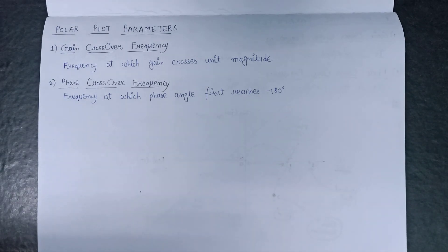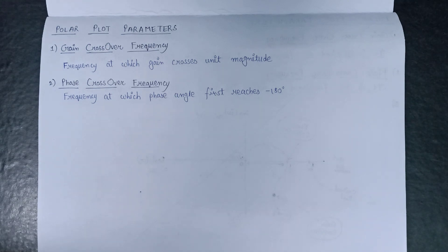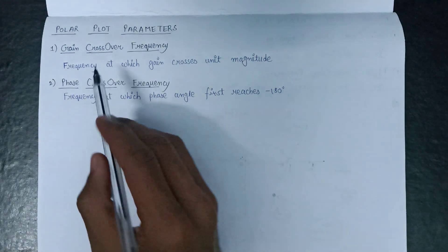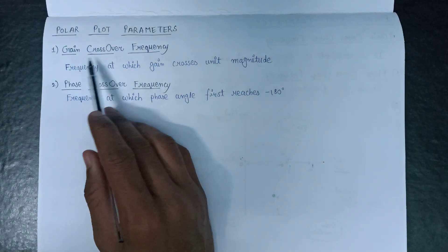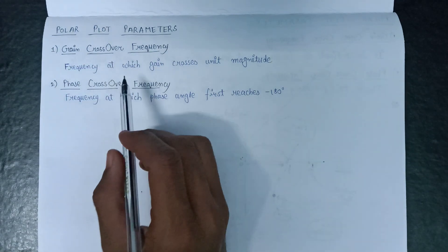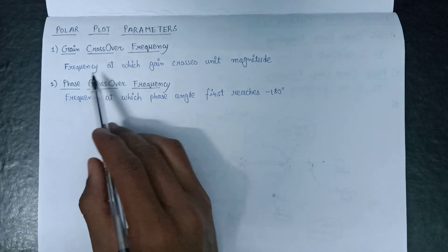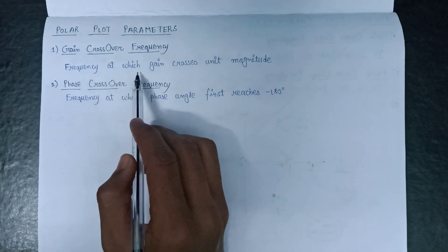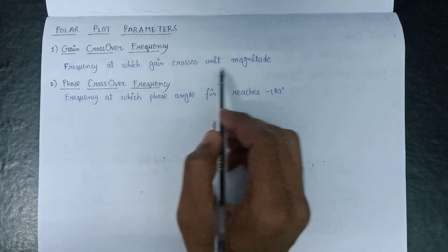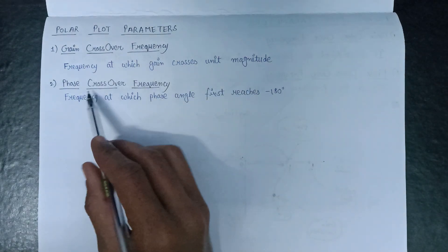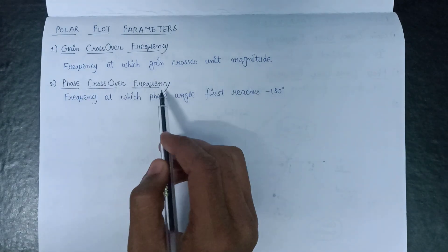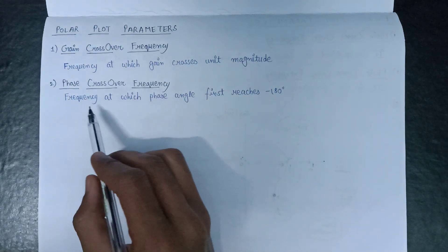Welcome. In this lecture we are going to discuss about the polar plot important parameters. The first parameter is gain crossover frequency, which is defined as the frequency at which the gain crosses unit magnitude. Moving on to the second parameter, that is phase crossover frequency.